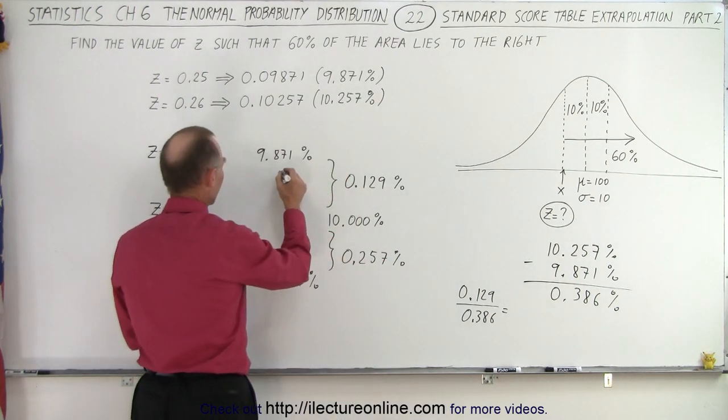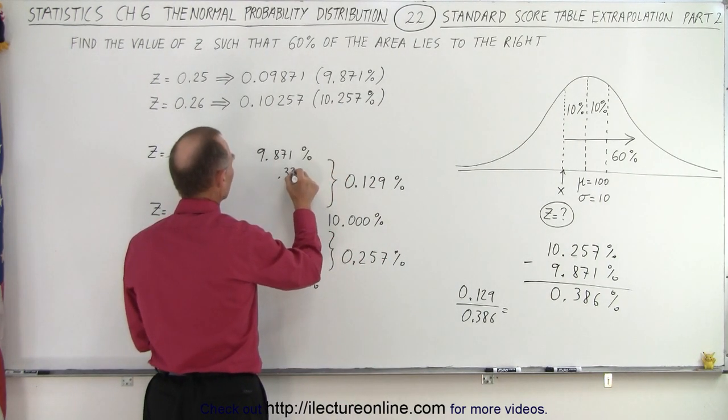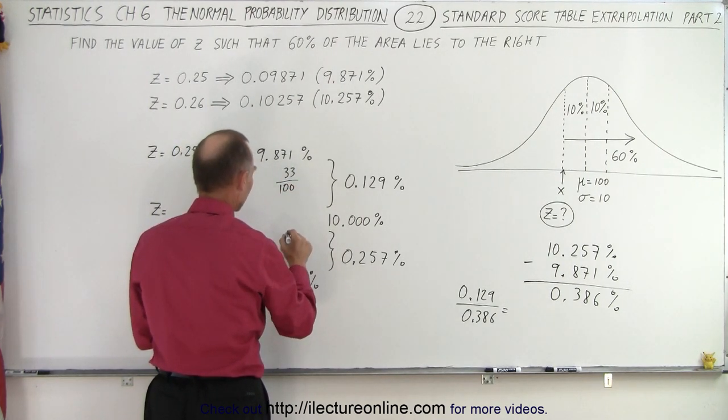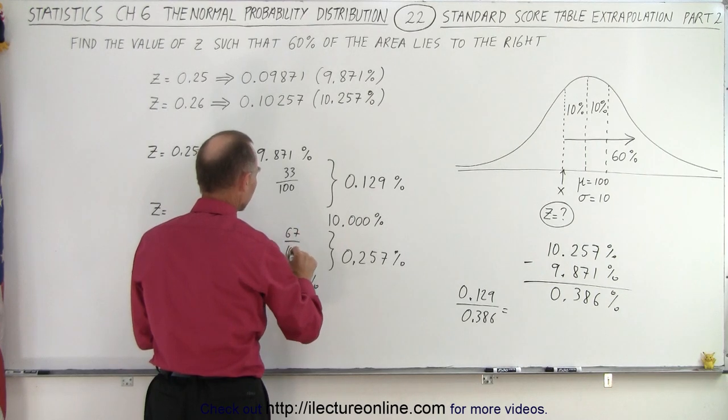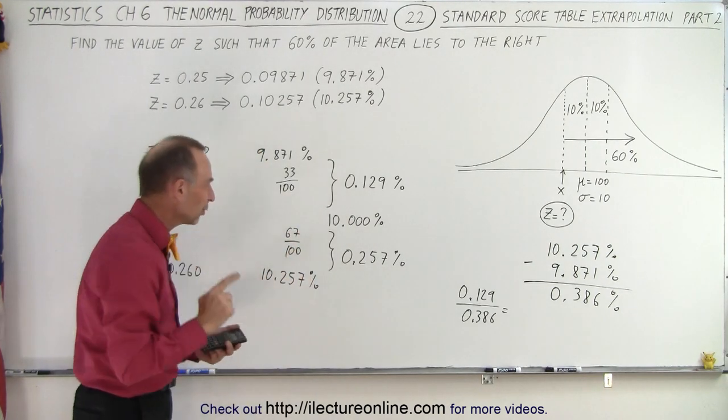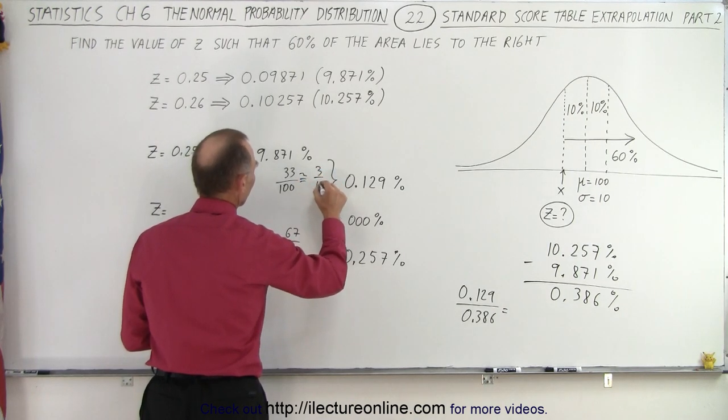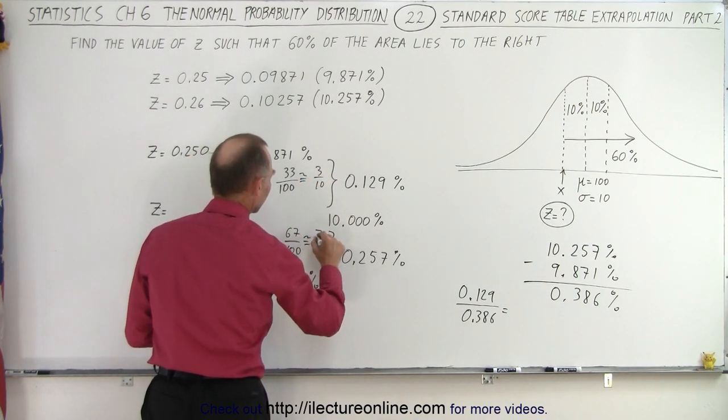So this is about 0.33 over 100, or 33 over 100, and this is about 67 over 100. So, since we're only looking for one more decimal place, let's call this approximately 3 tenths, and let's call this approximately 7 tenths.